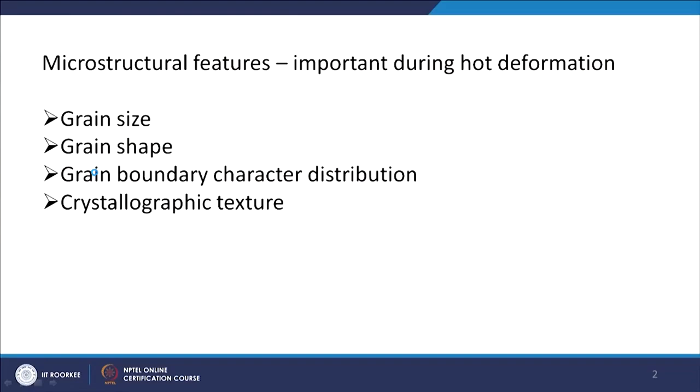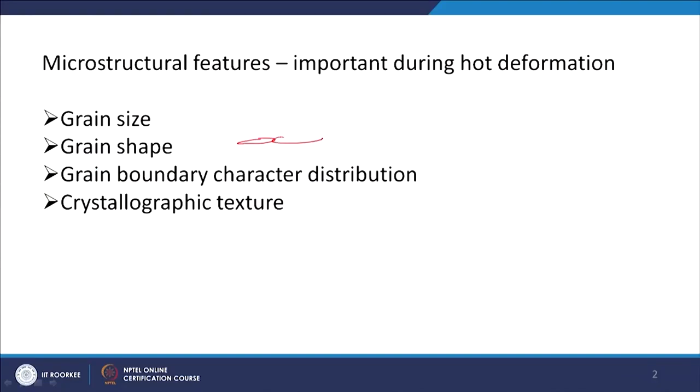Another feature is grain shape. With different hot deformation processes you would get different kinds of shapes — it can be equiaxed, meaning in all directions the size of the grain is the same, or it can have elongated grains. Then there is grain boundary character distribution — there are differences such as low angle grain boundaries and high angle grain boundaries.